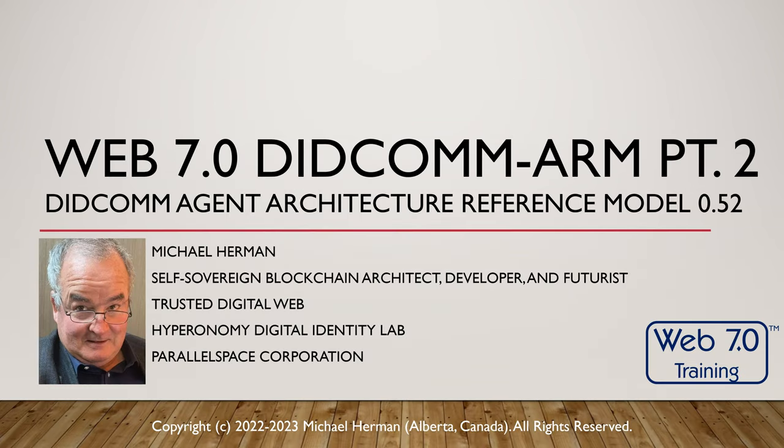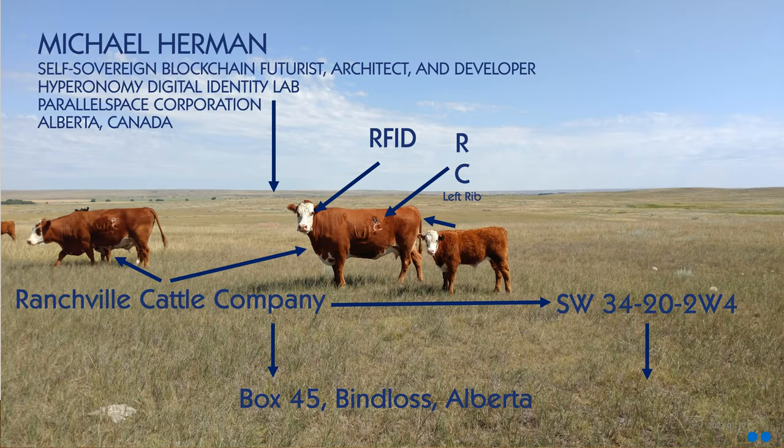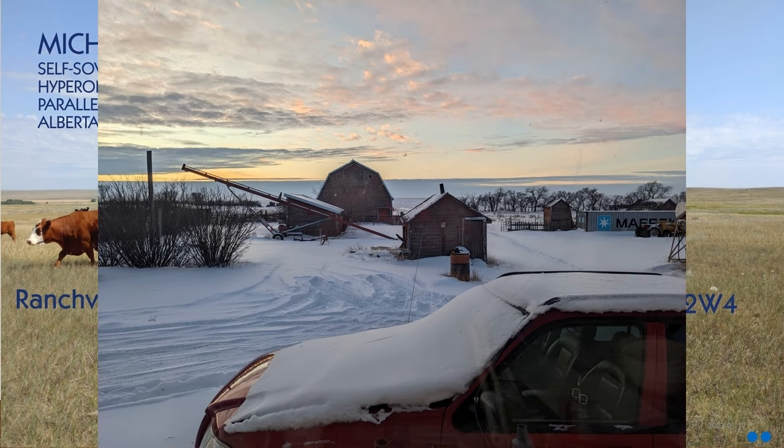So that's the introduction and follow-ups from last time. Let's start in earnest now — we're about 16 or 17 minutes into the talk. My name is Michael Herman. I live on a cattle ranch in southeastern Alberta, about four hours north of Havre, Montana, and about three hours straight east of Calgary, Alberta.